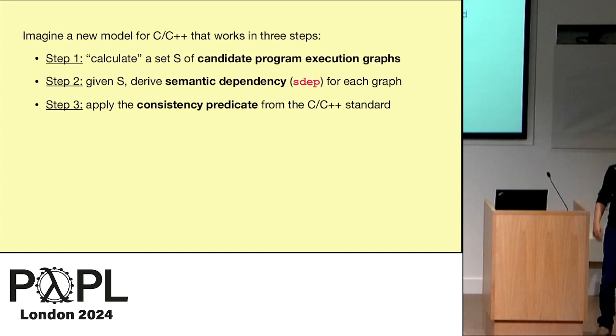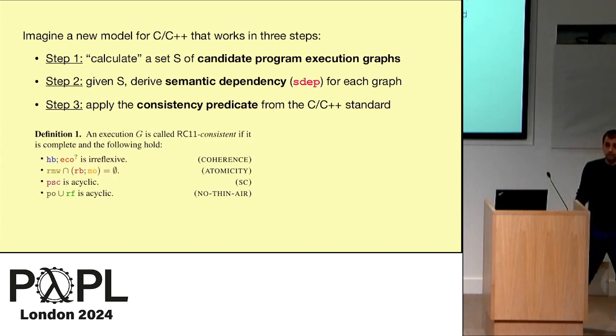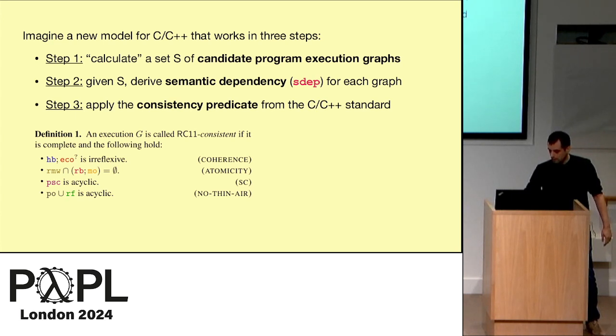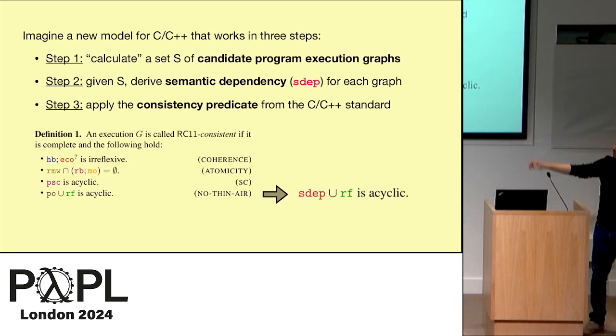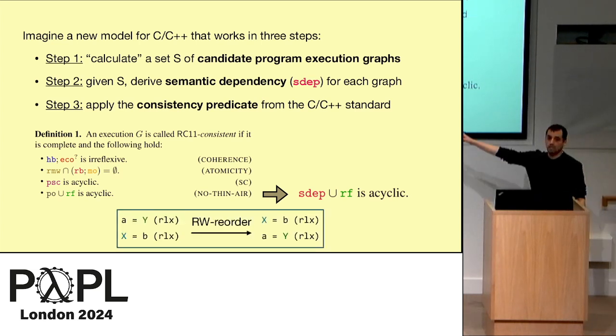I keep step two and step three parametric. I'm not saying how we are going to do this, but let's imagine it's going to work. So this is the consistency predicate of RC11, for those of you who know the bunch of derived relations. It's not so important, but what we get on top of RC11 is that we are able to replace this axiom. There's no thinner axiom, very conservative, no cycles in program order and reads from, by a much less conservative axiom, no cycles in semantic dependency union and reads from.